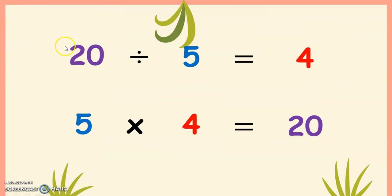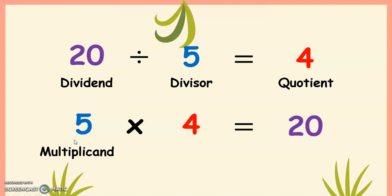In the division sentence, we have 20 as the dividend and 5 as the divisor. When we divide 20 by 5, we get 4 as the quotient. In the multiplication sentence, we have 5 as the multiplicand times 4, which is the multiplier. We get 20 as the product.